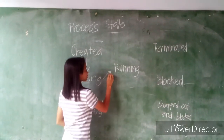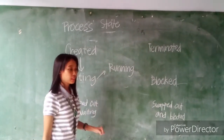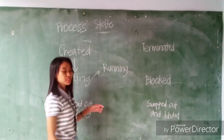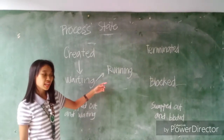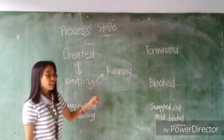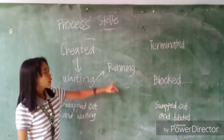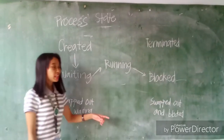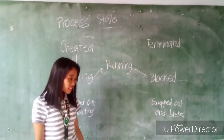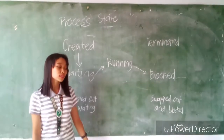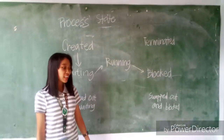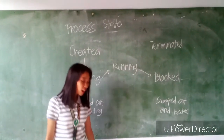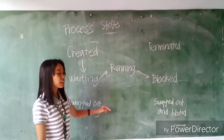Waiting goes to running. A process moves into the running state when it is chosen for execution. It enters the running state when it cannot carry on without an external change in state or event occurring.